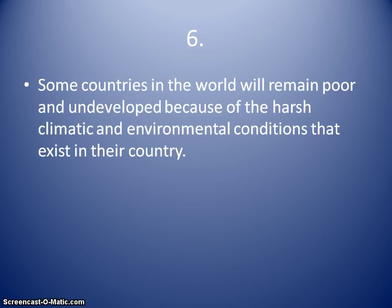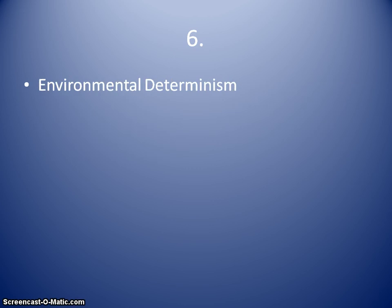Statement six: some countries in the world will remain poor and undeveloped because of the harsh climatic and environmental conditions that exist in their country. That's going to be environmental determinism — the statement is showing that it is the harsh environmental conditions forcing these countries into poverty. Not a lot of people agree with those kinds of statements anymore, and they look to other things like dependency theory and the economic structure of the world. But if we look at that statement based upon what was made, it would be from an environmental determinist perspective.